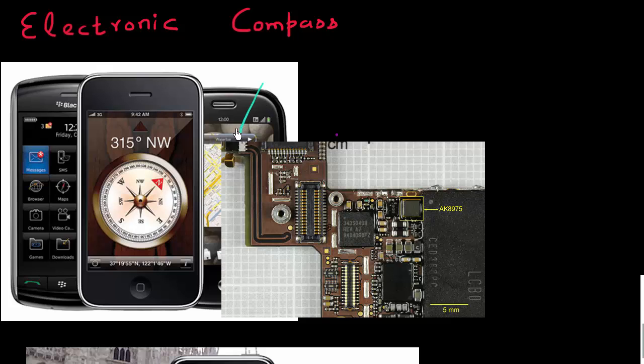If you've used the navigation feature on your smartphone or tablet, you must have made use of this IC, which is an electronic compass, located on the printed circuit board of most modern smartphones nowadays.